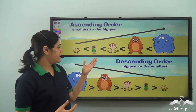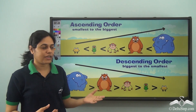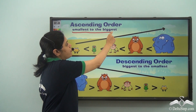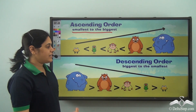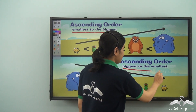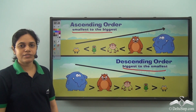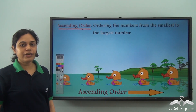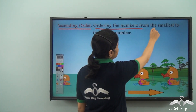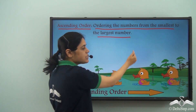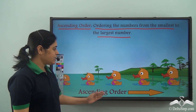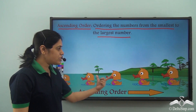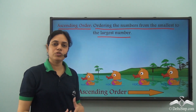We know what is ascending order and descending order. Ascending order means arranging from smallest to the biggest, and descending order means arranging from biggest to the smallest. So ascending order means ordering the numbers from the smallest to the largest number, just like these ducks are ordered or arranged from the smallest duck to the largest duck.